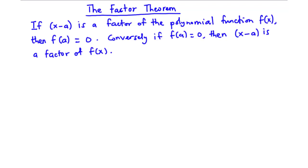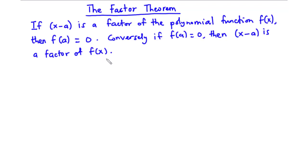If x minus e is a factor of the polynomial function f of x, then it means that f of e is equal to 0. Conversely, if f of e is equal to 0, then x minus e is a factor of the polynomial f of x.